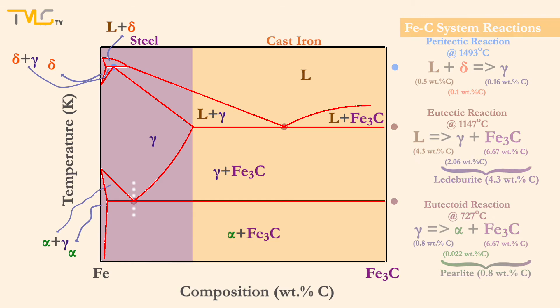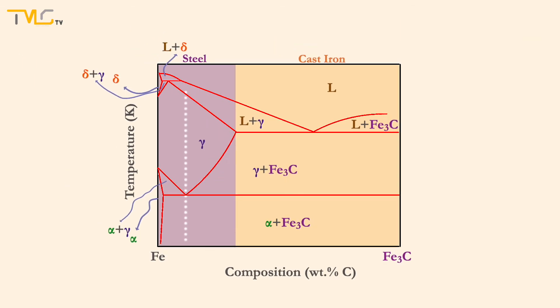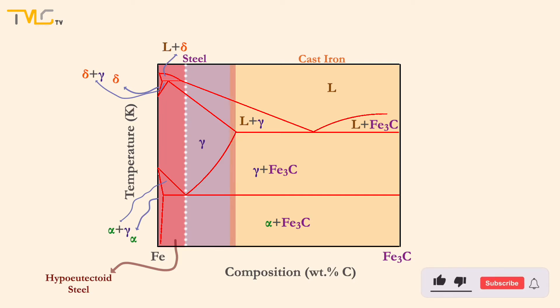Eutectoid composition separates the steels into two groups. Steels having compositions between 0 and 0.8 percent carbon loading up to the eutectoid composition are called hypoeutectoid steels, and steels having compositions between the eutectoid point and 2.06 weight percent carbon loading are called hypereutectoid steels.